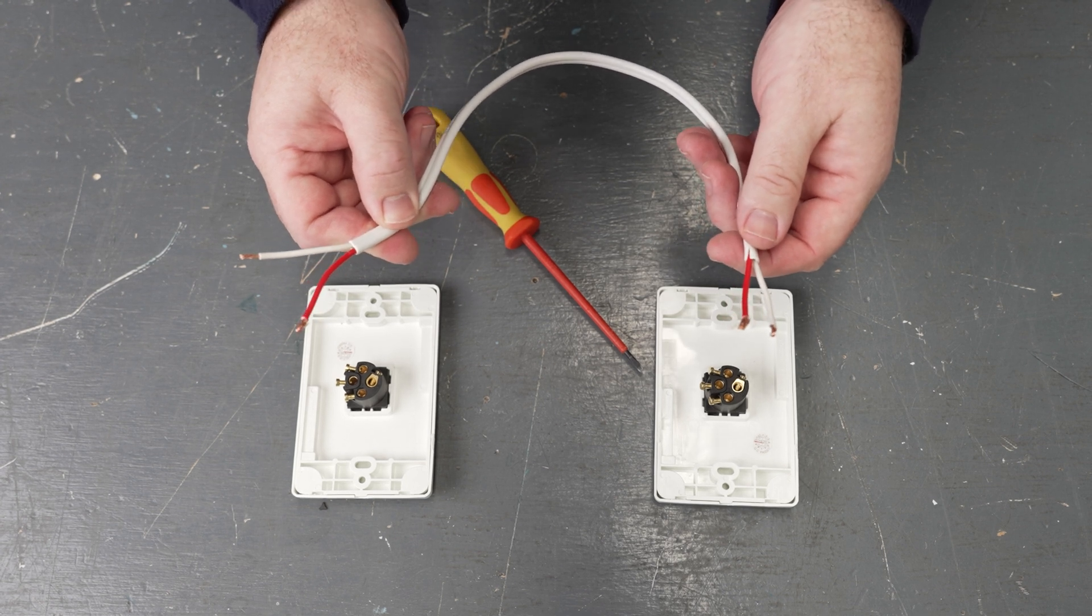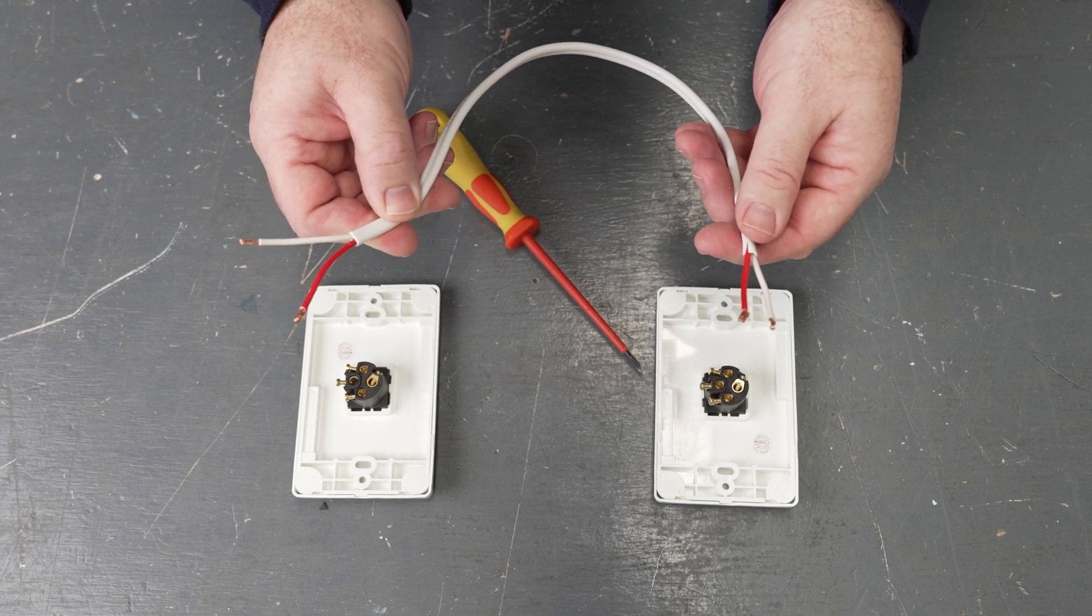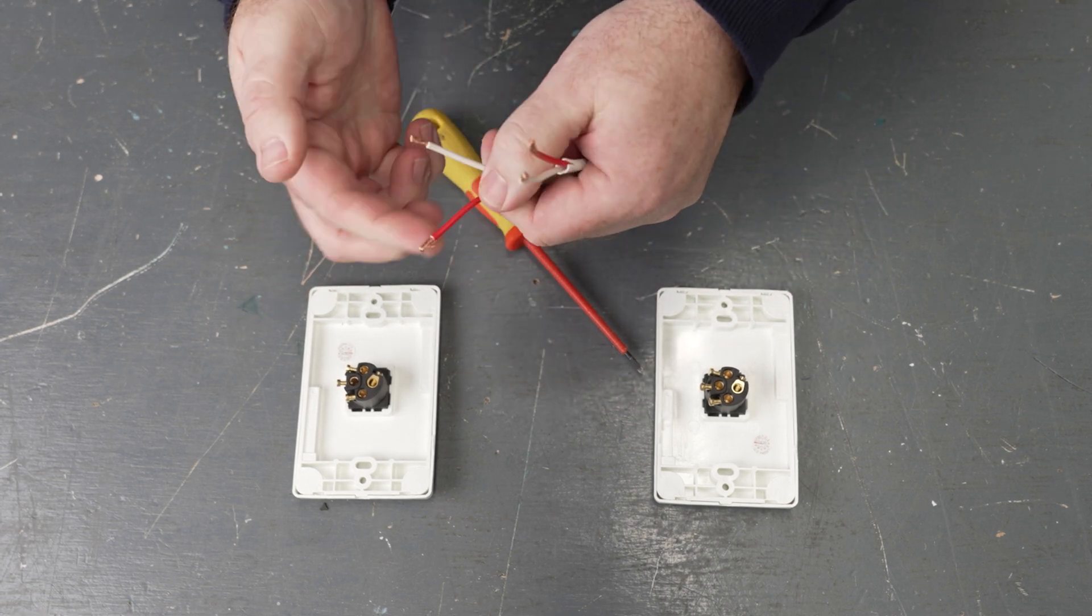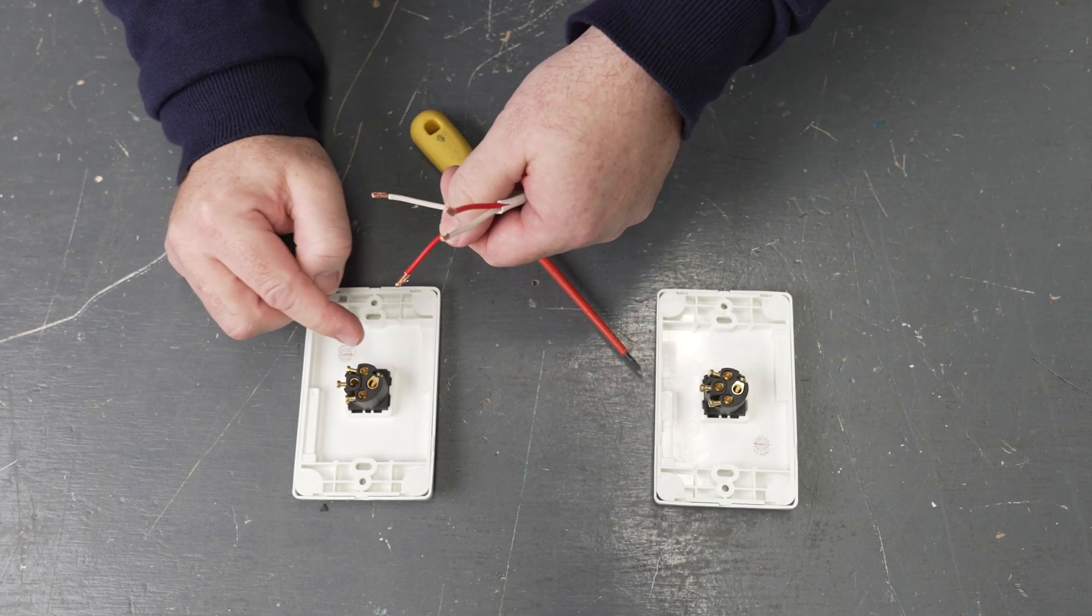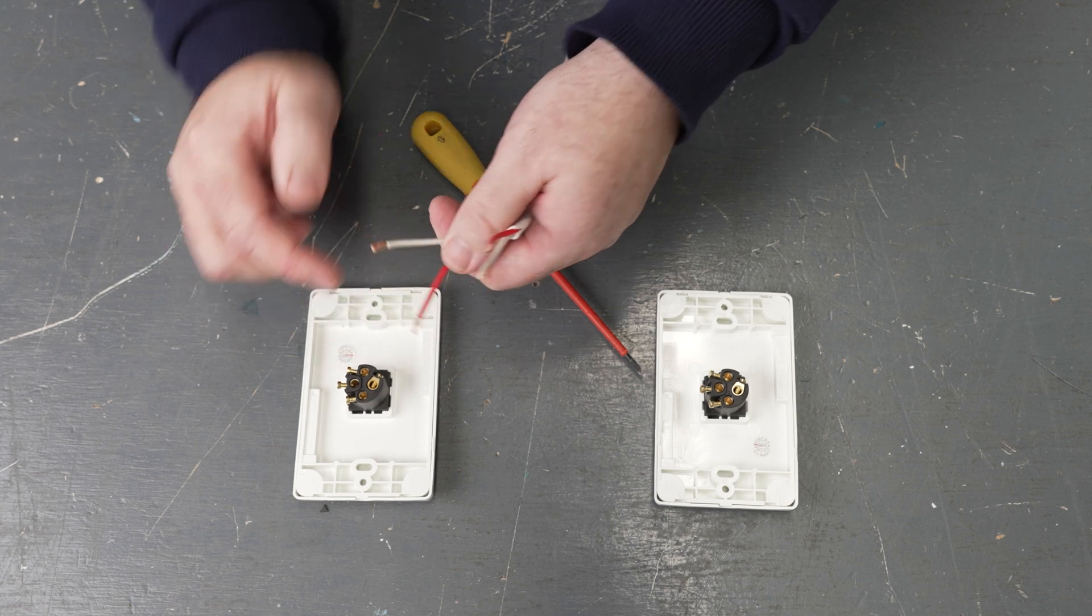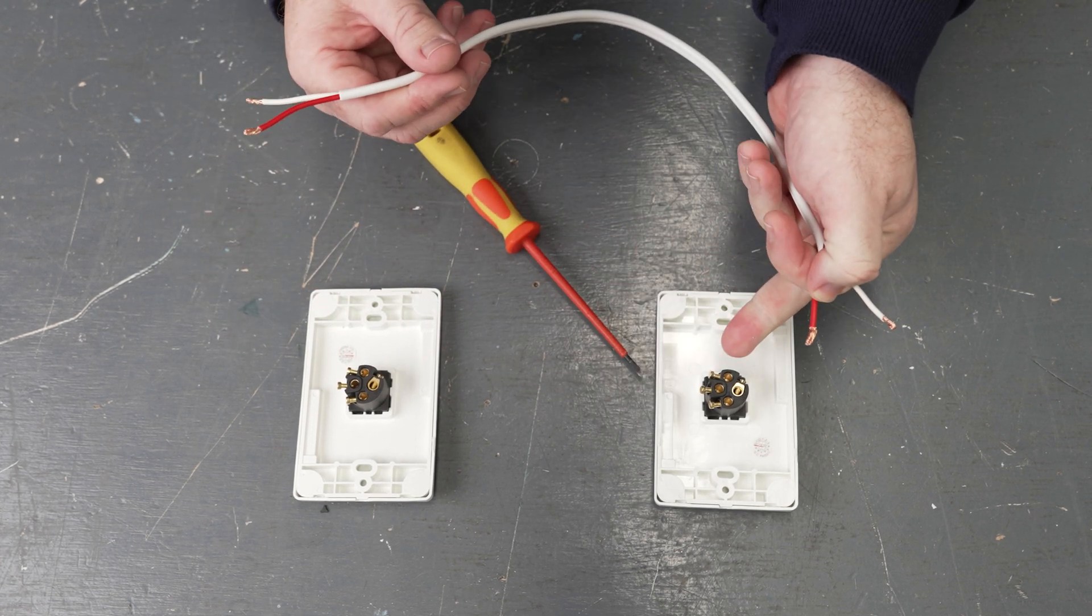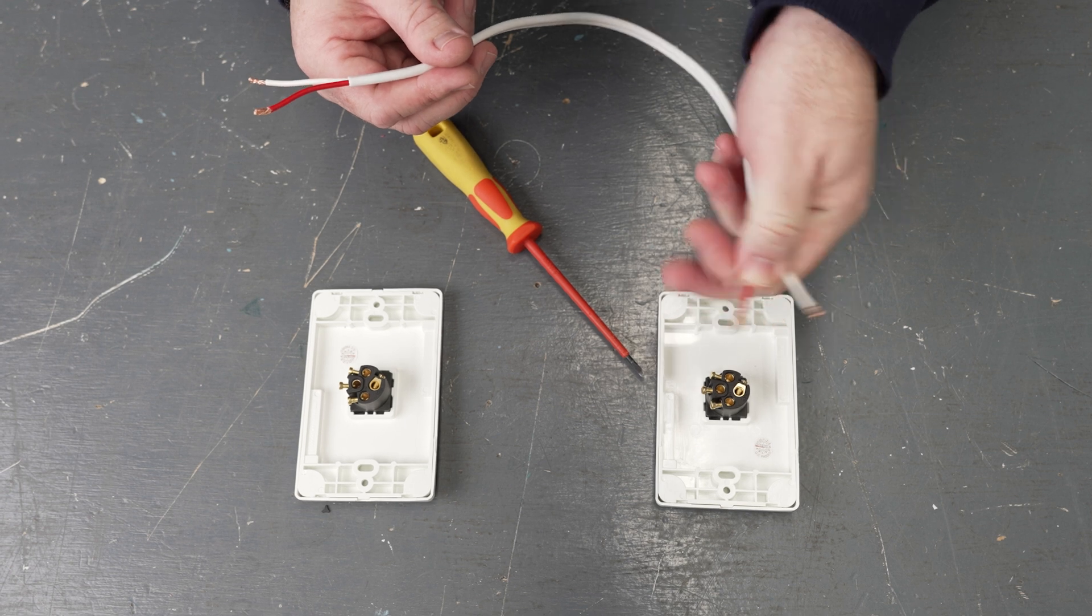As per our drawing, we're going to be using a strapper cable between the two light MECs. In this case, this is a twin active. We're going to take the red conductor and terminate it into the number one terminal. The other end, we'll do the same, making sure to put it into the number one terminal.